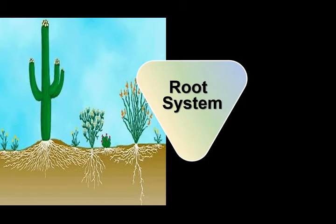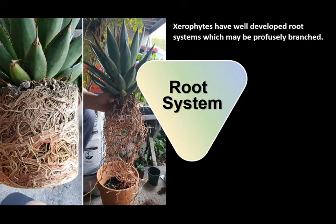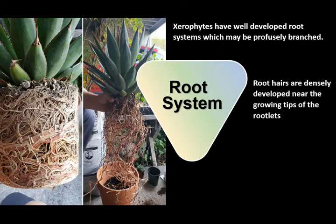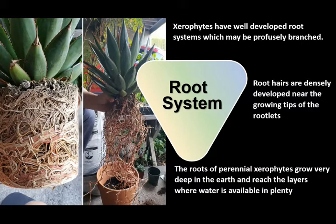First, let us study the morphological adaptations, starting with the root system. The root system in xerophytes is profusely branched. Looking at the image of an agave plant, you can see the enormous growth of both shoot and root. The roots are superficial and highly branched to absorb water available in the superficial layer of the earth. Root hairs are densely developed near the growing tips of rootlets. In perennial xerophytes, roots grow very deep into the earth to reach water.